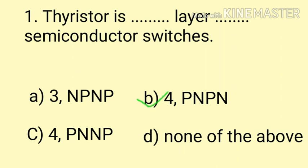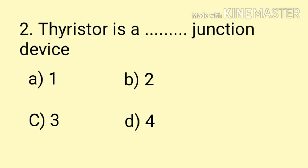Question number two: Thyristor is a __ junction device. Options: one, two, three, four. Thyristor, as we have discussed earlier, is a four layer device. Four layer means three junctions. Here the correct answer is option C, thyristor is a three junction device.